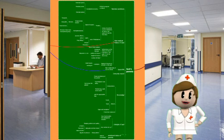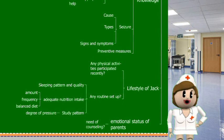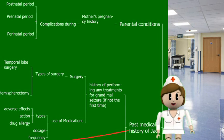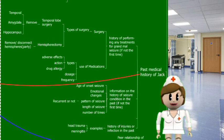Finally, we will assess Jack's parents. This includes parental conditions, past medical history of Jack, social life, immunity record, knowledge, lifestyle, and emotional status of the parents. For parental condition, we should assess the pregnancy history of Jack's mother for any complications during prenatal, perinatal, and postnatal periods, such as infection or history of seizure during pregnancy. For past medical history, we ask parents for in-depth information related to his disease.